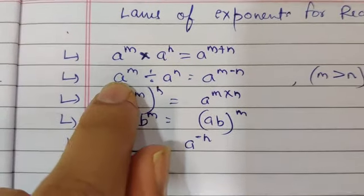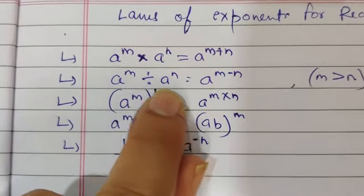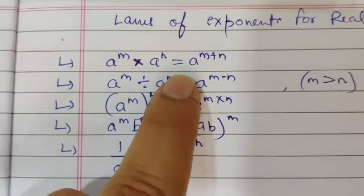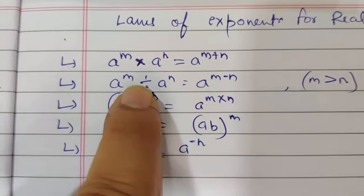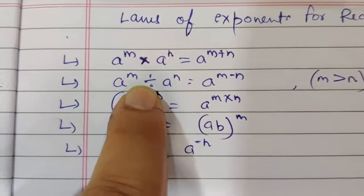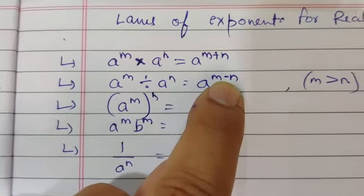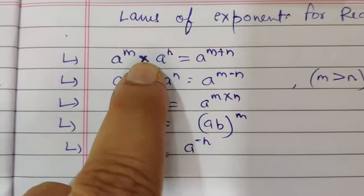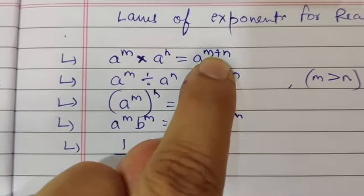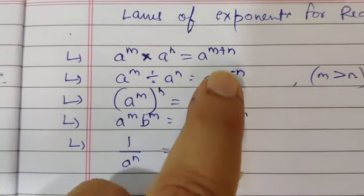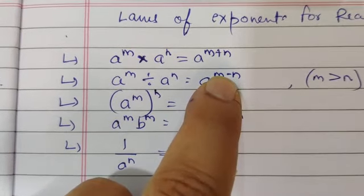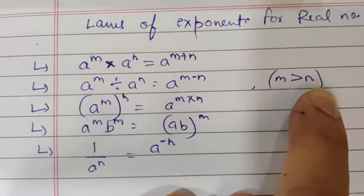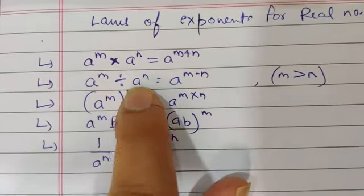The second law: A to the power M divided by A to the power N. Again, the bases are the same and the powers are different. At the time of multiplication, powers are added; at the time of division, powers are subtracted. The condition is that M should be greater than N.